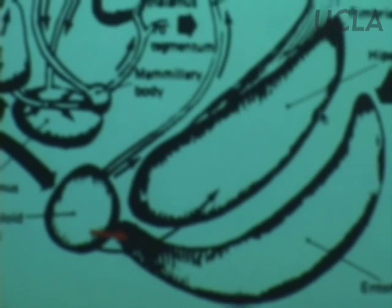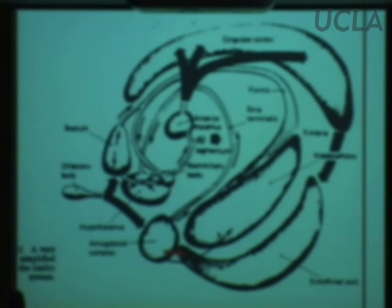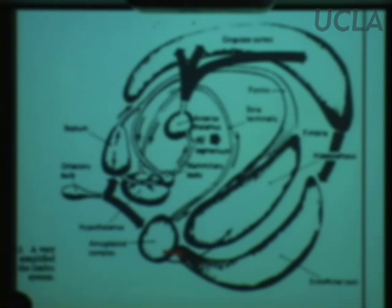As you can see in this diagram, the entorhinal cortex sends projections to the hippocampus. The hippocampus sends projections to where? The septal nuclei. The axons connecting the hippocampus with the septal nuclei are called the fornix. These are axons going from the hippocampus to the septal nuclei, and one of the septal nuclei sends axons back to the hippocampus via this fornix.